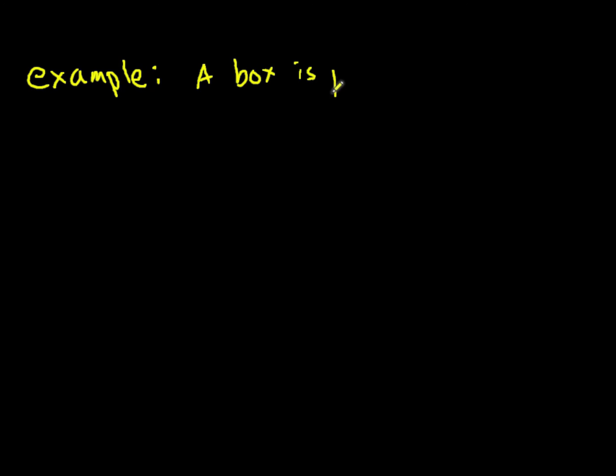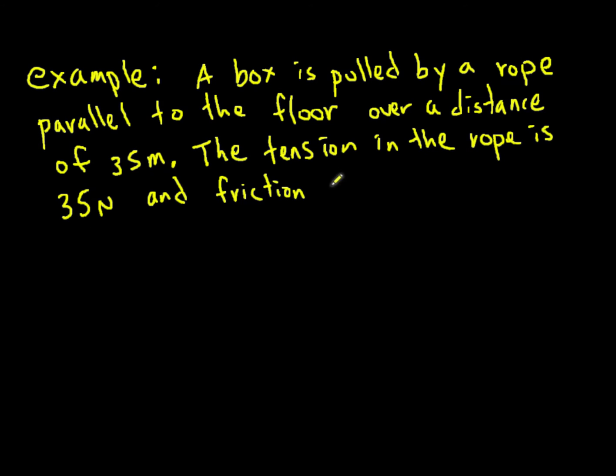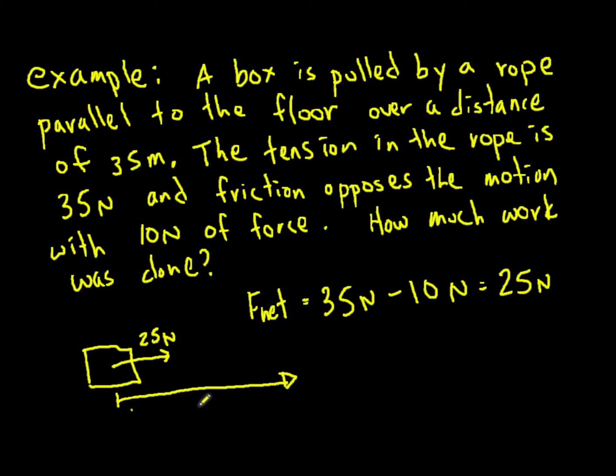For example, a box is pulled by a rope parallel to the floor over a distance of 35 meters. The tension in the rope is 35 newtons, and friction opposes the motion with 10 newtons of force. How much work was done? F net is the force of tension minus the force of friction. This is 25 newtons forward. So the box is being pulled by the rope with a net force of 25 newtons traveling the same direction for its displacement of 35 meters. We can just use work equals force times distance since they're both pointing in the same direction. This is 25 times 35, which gives us work equals 8.8 times 10 to the 2 joules.